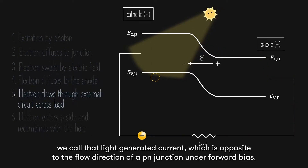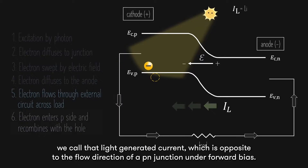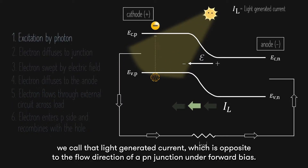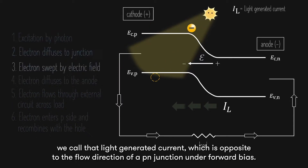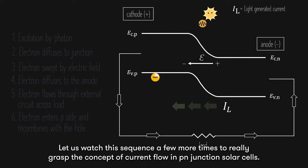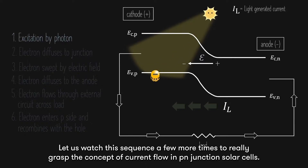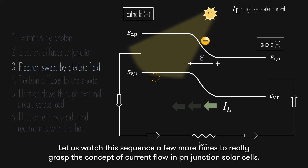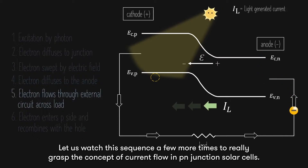We call that light-generated current, which is opposite to the flow direction of a PN junction under forward bias. Let us watch this sequence a few more times to really grasp the concept of current flow in PN junction solar cells.